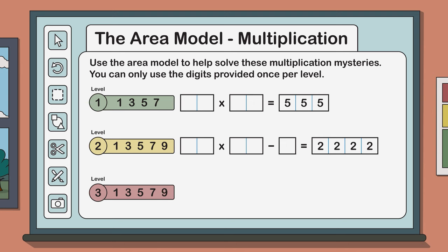This time our number sentence is a two digit number multiplied by another two digit number multiplied by a one digit number.